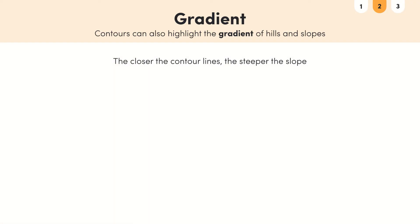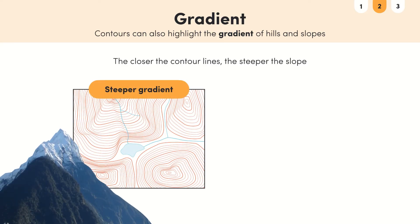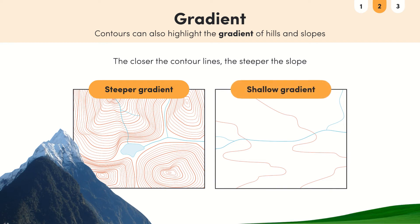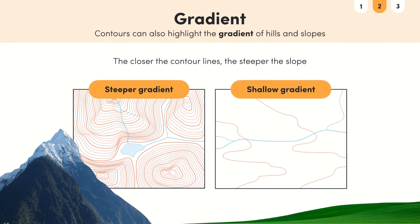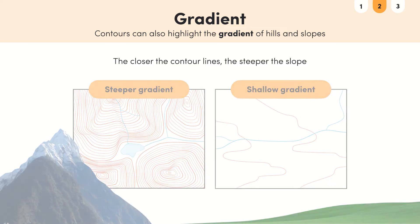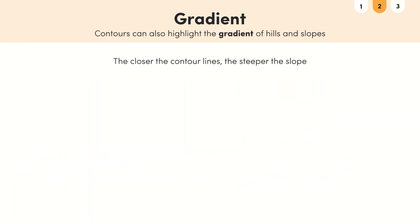Lines which are close together show a steep gradient while lines that are further apart show a shallow gradient. This concept can be used to work out if the slopes are concave, convex or uniform.